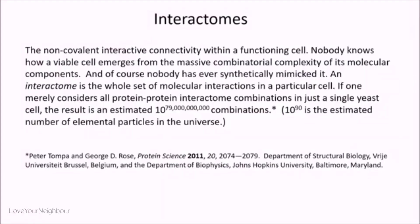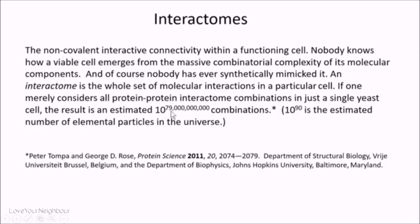But we made a protocell, so we're sort of going toward life, right? No. They never address this. Then there are the interactomes — the non-covalent interactions within a functioning cell. If you just take the proteins in a single yeast cell — 3,000 different proteins — what's the number of ways they can line up next to each other for the cell to work? That's been calculated by groups from Brussels and from Johns Hopkins, and it's 10 to the 79 billion combinations. The estimated number of elemental particles in the universe is 10 to the 90. You've got to get that thing right. Nobody has any idea how that happened. When cells divide, they transfer this order perfectly, but nobody knows where the first cell came from.